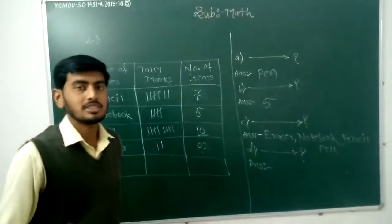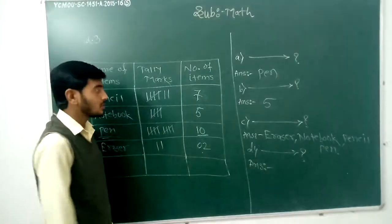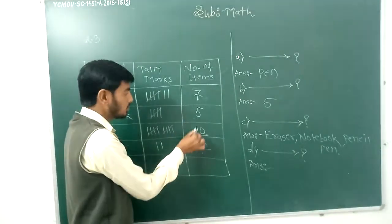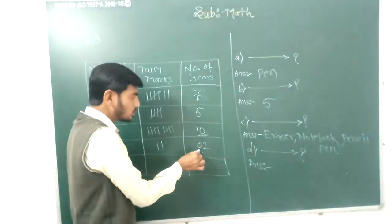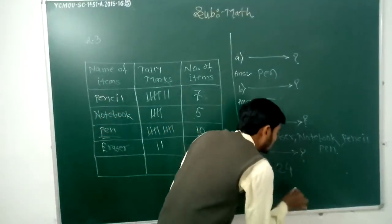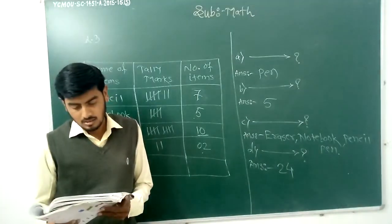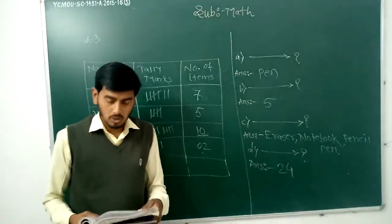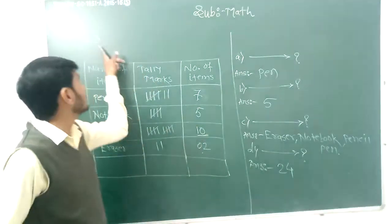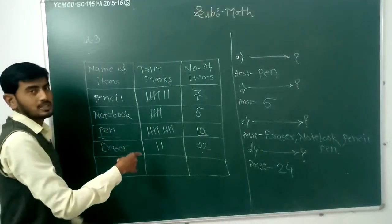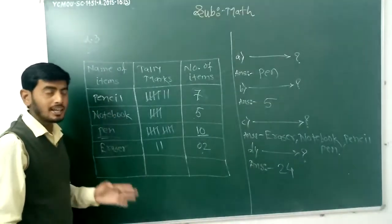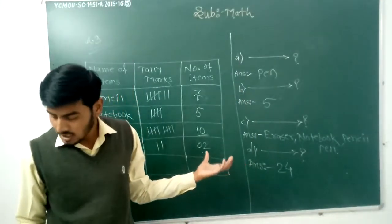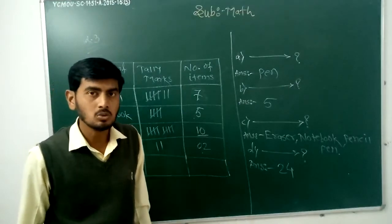Last question: how many total items were sold? Count per item: 7 plus 5 plus 10 plus 2. 7 plus 5 equals 12, plus 10 equals 22, plus 2 equals 24. Total 24 items were sold from the stationery. So, solve your question number 3 like this — firstly collect the information, write it down in tabular form, and then answer the questions. Thank you, take care.